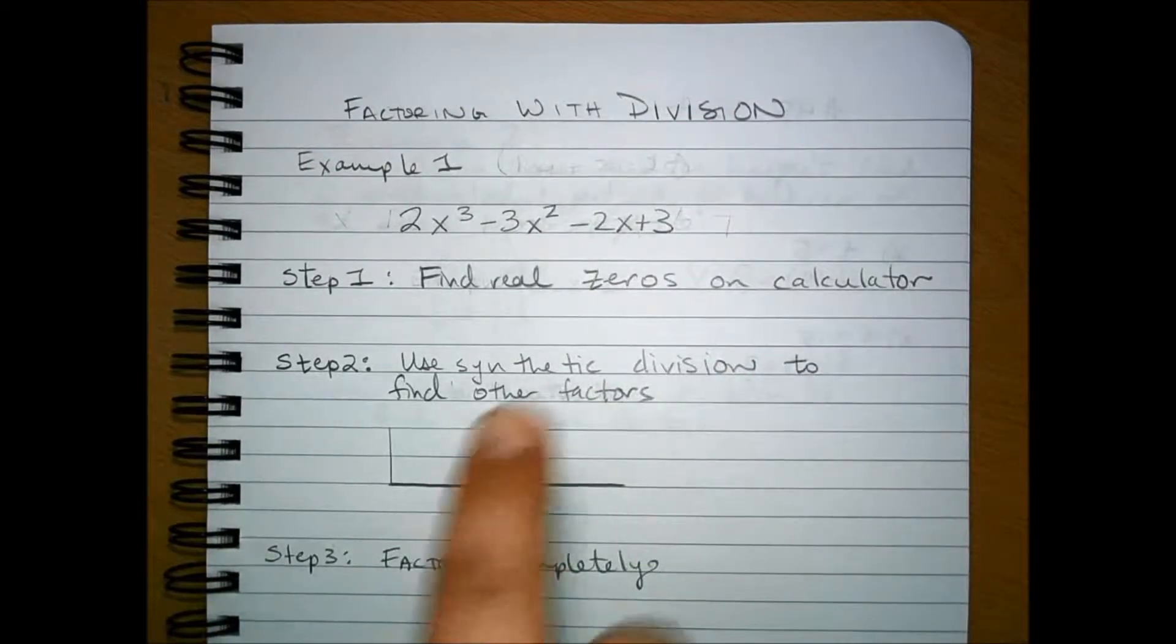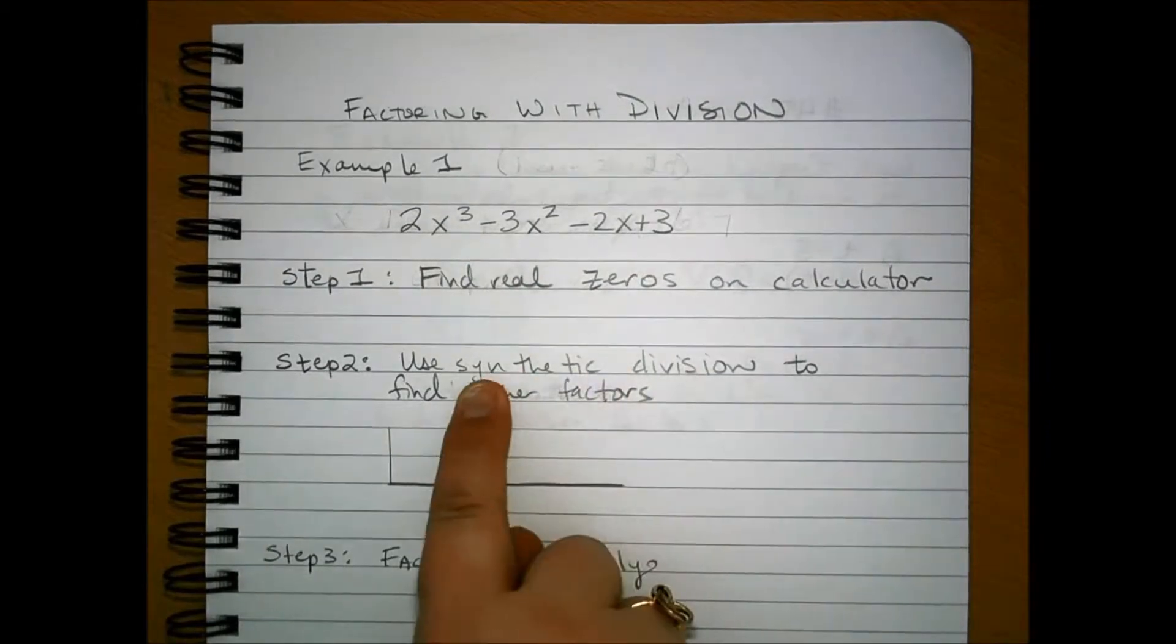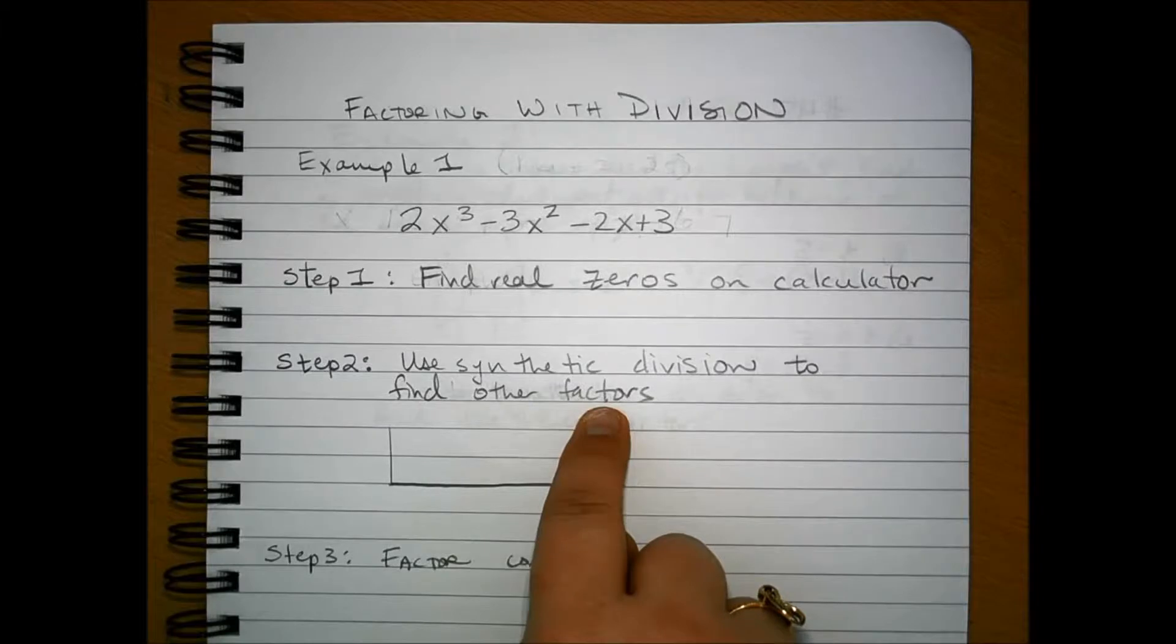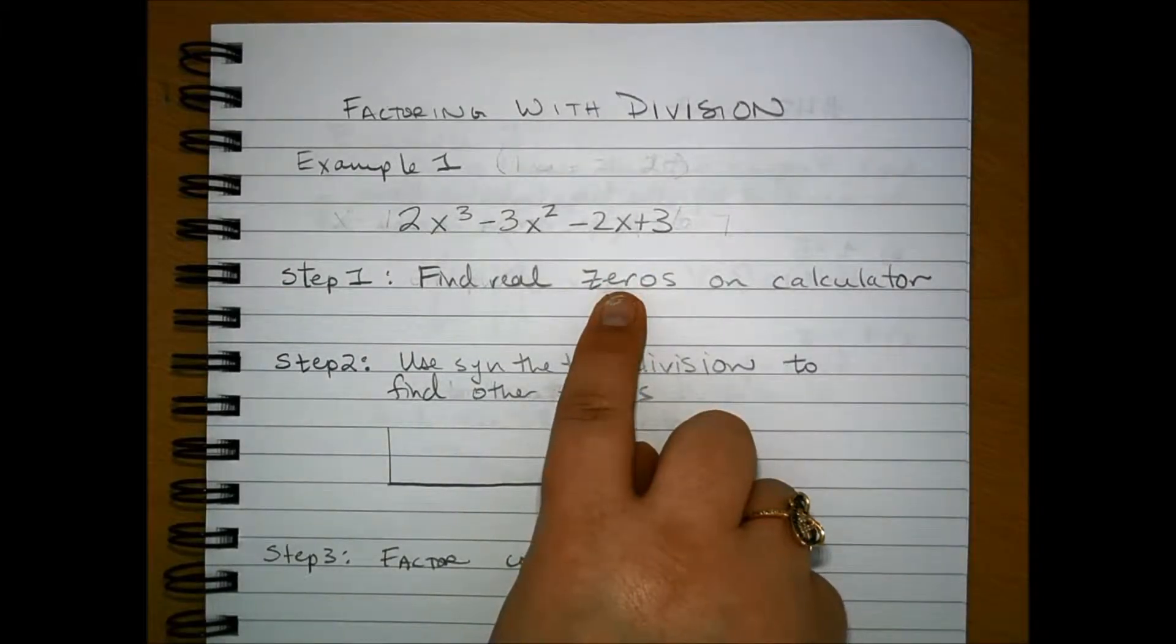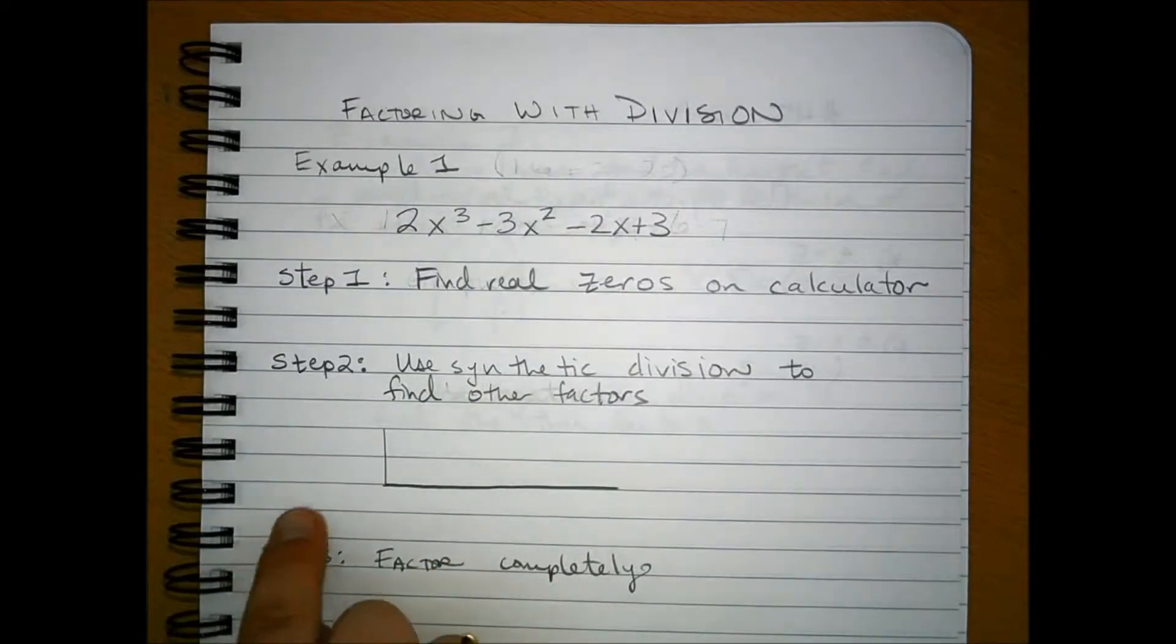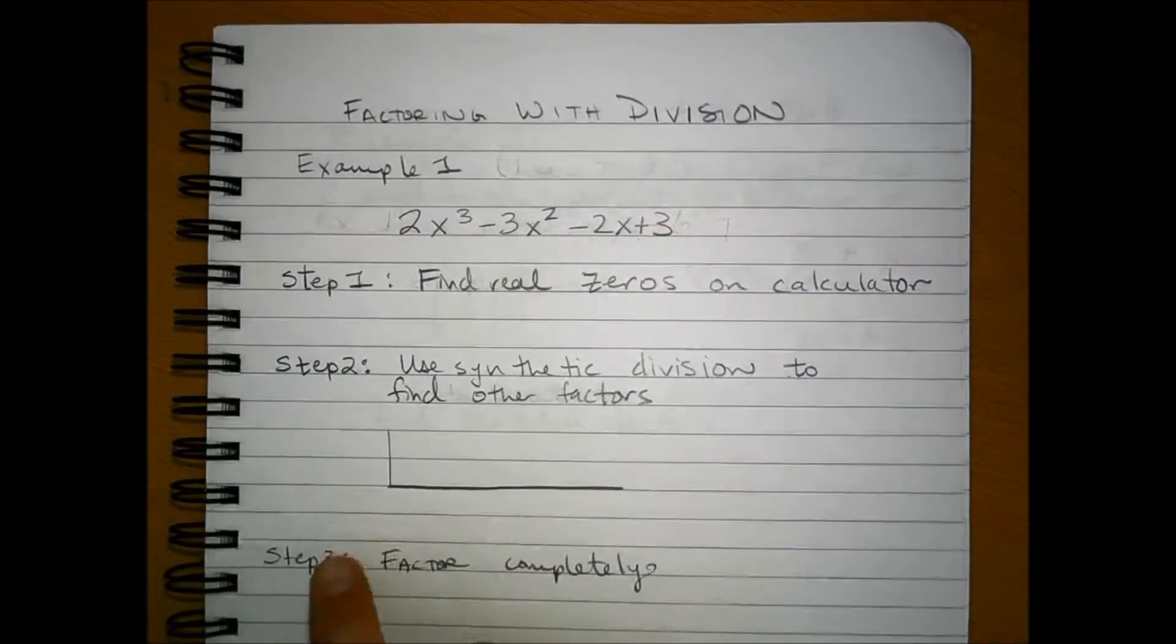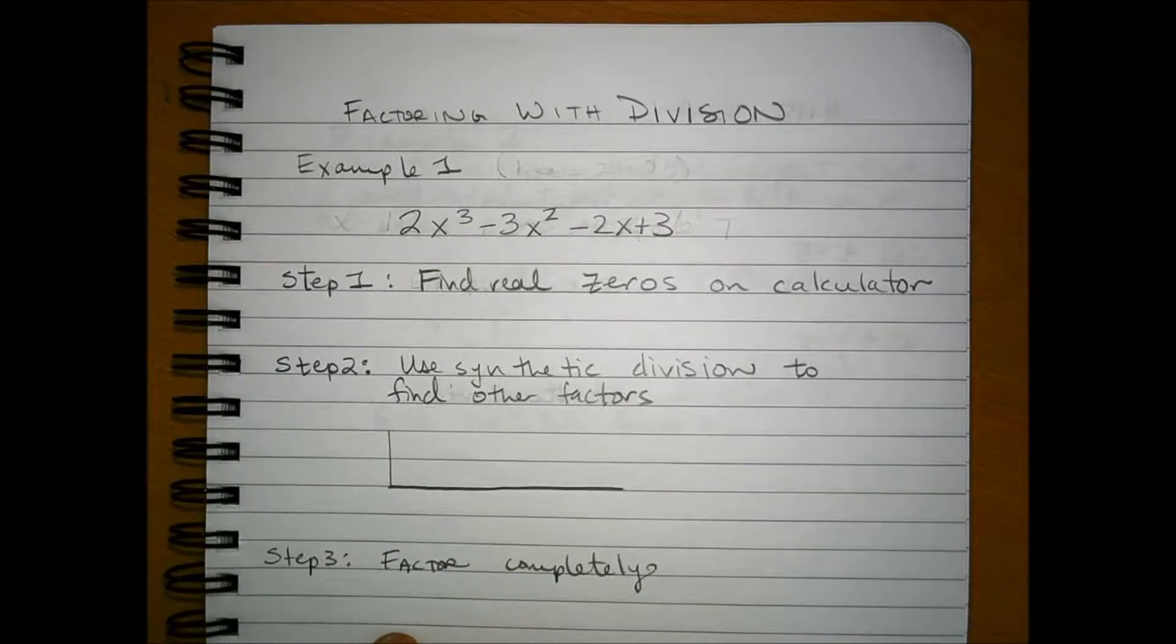I want you to keep that same thing in mind because we're going to be using synthetic division to find other factors. The idea is that you're going to use the zeros and synthetic division in order to find remaining factors and then you can factor completely.